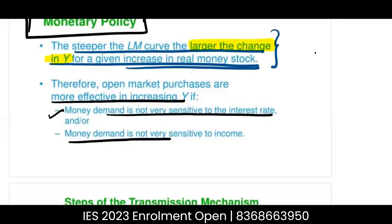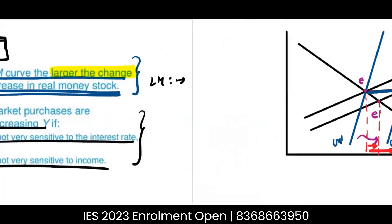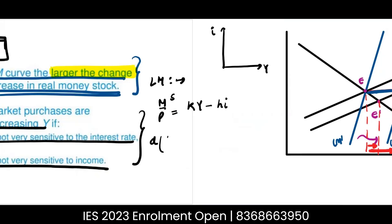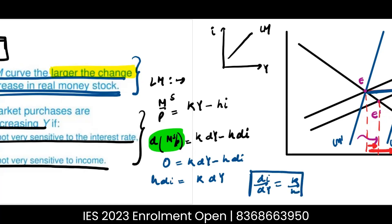This occurs if money demand is not very sensitive to the interest rate and is more sensitive to income. What is the equation of the LM curve? The supply of money equals the demand of money, so: M/P = KY − HI. For the equation of the LM curve in the I-Y plane, the change in M/P equals K·dY − H·dI. Along the LM curve there is no change in money supply, so this equals zero, giving us K·dY = H·dI, and therefore dI/dY = K/H — this is the slope.